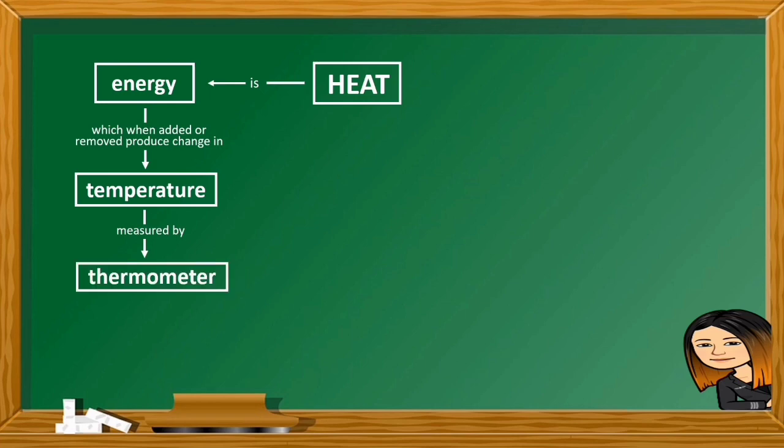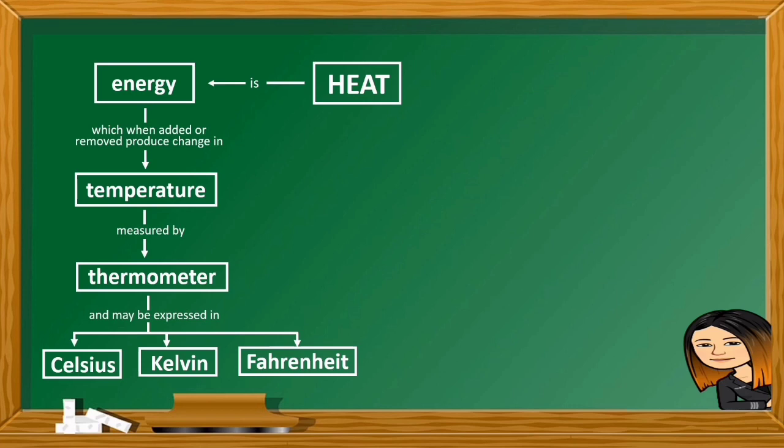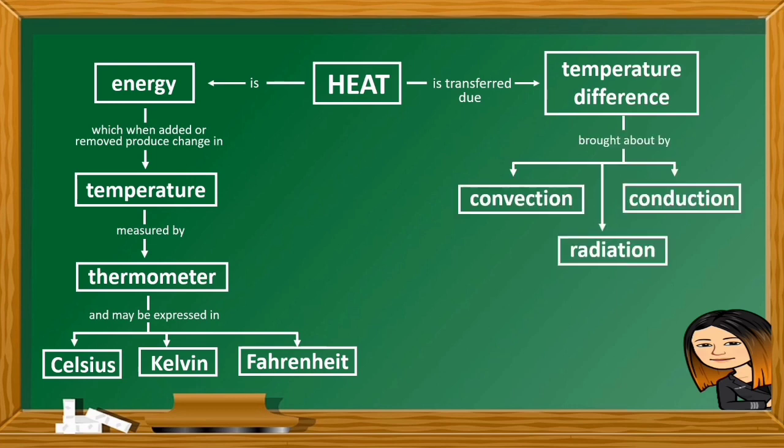Celsius, Fahrenheit, and Kelvin are the three common temperature scales. Heat is transferred due to temperature difference brought about by convection, radiation, and conduction.